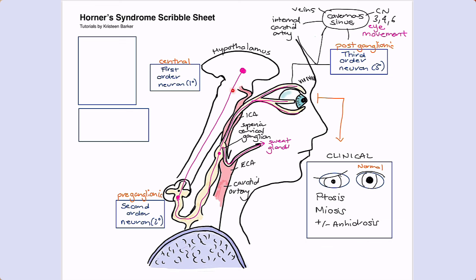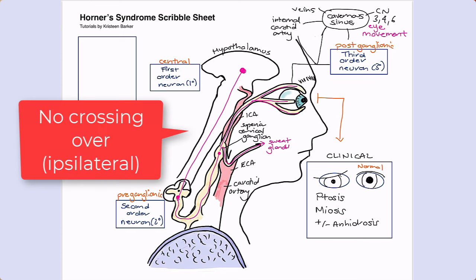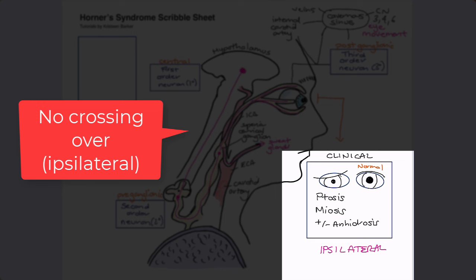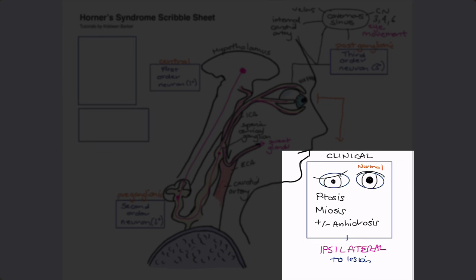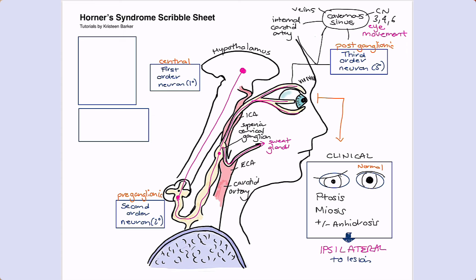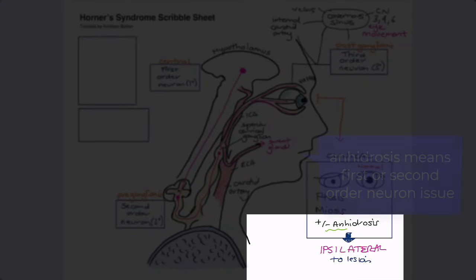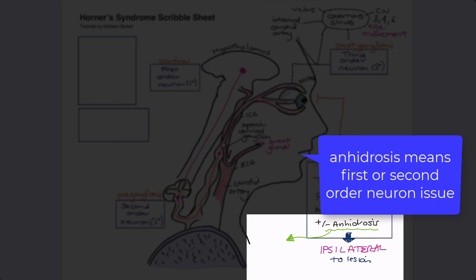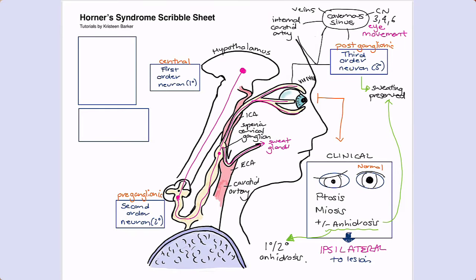Two important things to notice: first, from the hypothalamus all the way to the face there is no crossing over — everything is ipsilateral. So regardless of whether it's a central or peripheral lesion, Horner's syndrome is always ipsilateral to the culprit lesion. Second, because the nerves affecting facial sweating branch off at the end, anhidrosis should only feature in Horner's syndrome when first- or second-order neurons are affected. If sweating is preserved, we're thinking this is likely a third-order neuron problem.